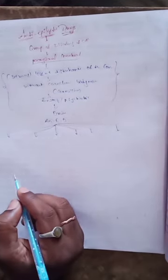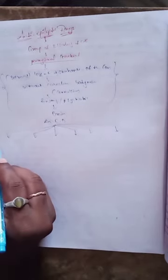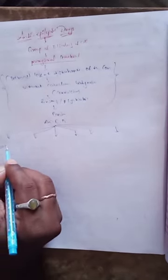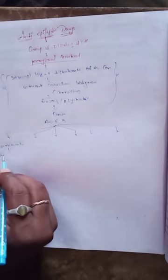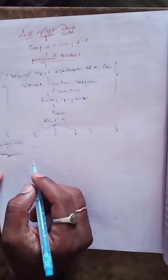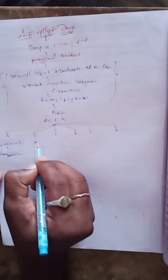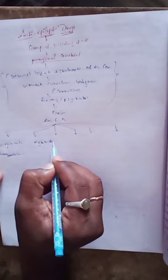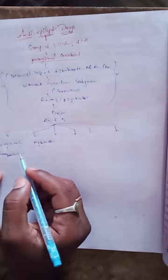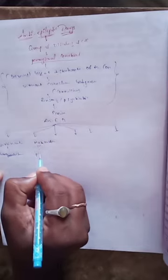First, barbiturates — example is phenobarbitone. Second, hydantoins — example is phenytoin.